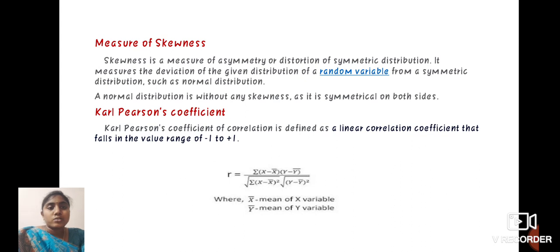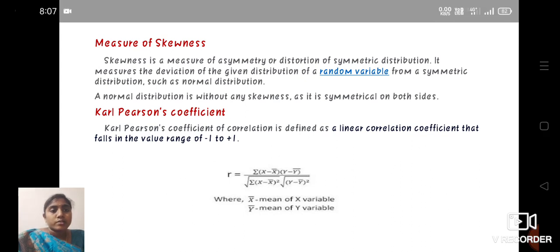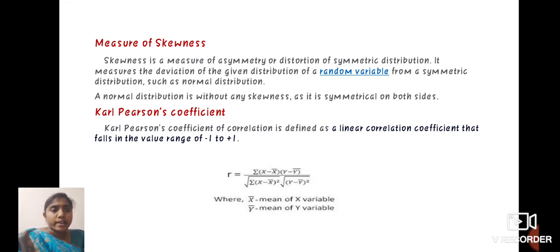Next, we define the Karl Pearson coefficient. Karl Pearson coefficient of correlation is defined as the linear correlation coefficient that falls in the range of minus 1 to plus 1. Then R equals summation of (X minus X-bar) into (Y minus Y-bar) divided by root of summation of (X minus X-bar) whole square into root of summation of (Y minus Y-bar) whole square, where X-bar is the mean of X variable and Y-bar is the mean of Y variable.